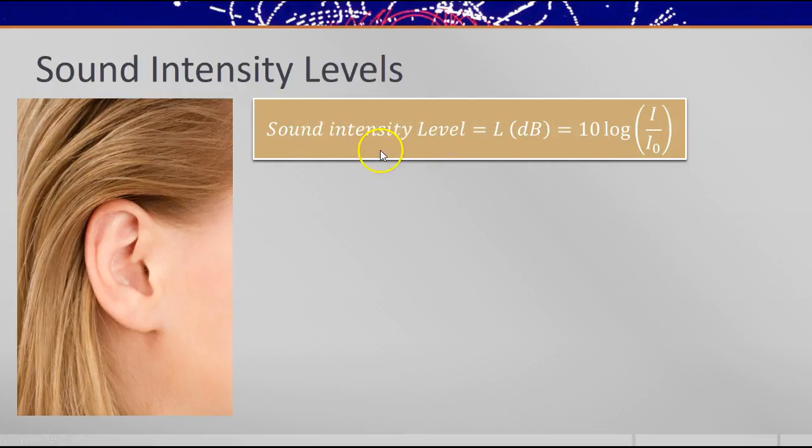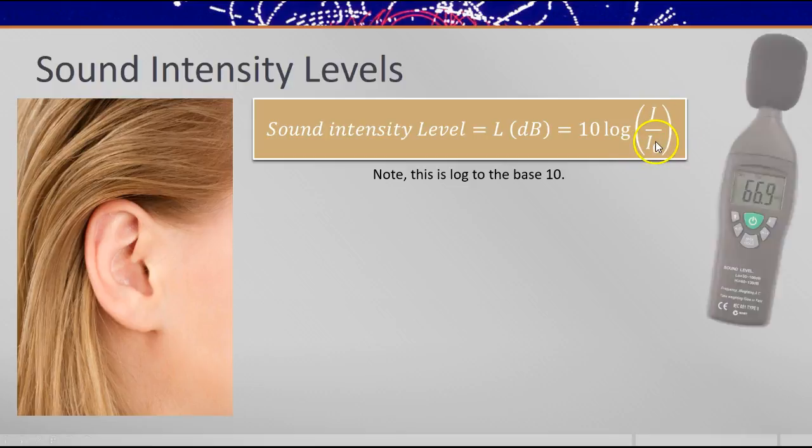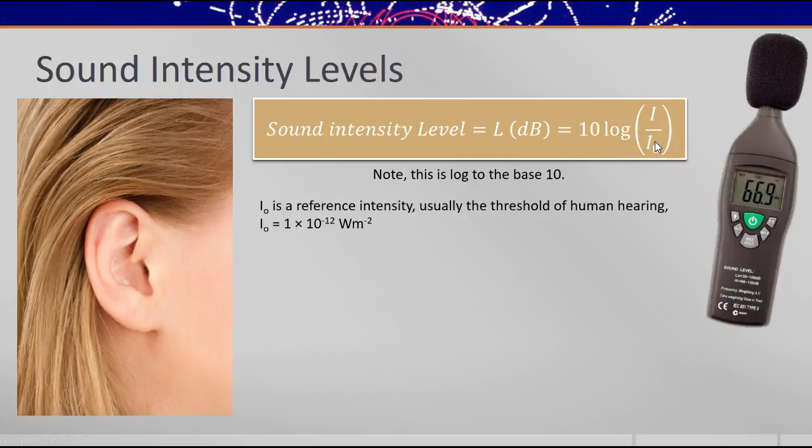The formula for decibel is this. The sound intensity level, so it's given the symbol L in decibels, is 10 multiplied by log, and that's log to the base 10, of the intensity of the sound divided by I₀. You have to have a ratio for intensity levels. So it's how many times larger the sound level is that you're measuring, the intensity, over some reference intensity. And the reference intensity is normally the threshold of human hearing. So the quietest sound that you can hear. So we work out how many decibels louder the sound that you're listening to is than the sound that you could only just hear.